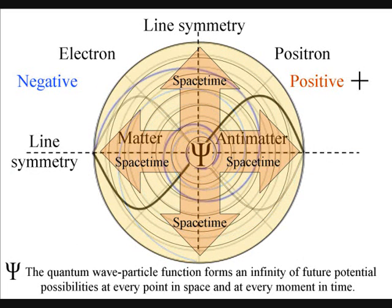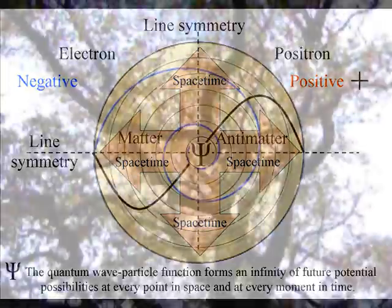Because of this process, we have a potential infinity of future possibilities at every point in space and at every moment in time that can spiral out, forming its own space-time geometry.